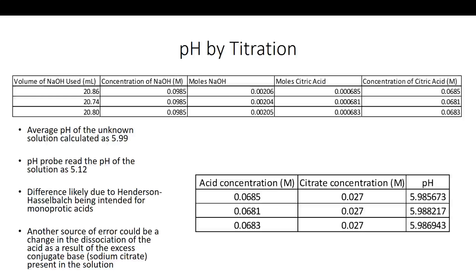We then wanted to compare the accuracy of this method to just using a pH probe. We put a pH probe in and found that pH was 5.12. There are a couple of things that could have caused this discrepancy. One is that the Henderson-Hasselbalch equation is generally intended for monoprotic acids, and we had a triprotic acid that we titrated. Another source of error could be the excess conjugate base sodium citrate present in the solution — Le Chatelier's principle tells us that having a lot of product present means we're less likely to have dissociation to as strong a degree.